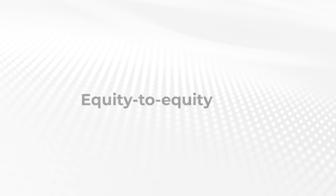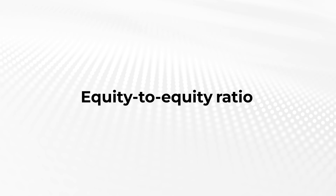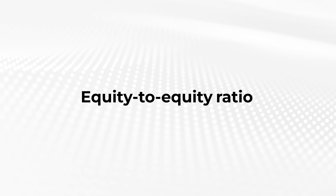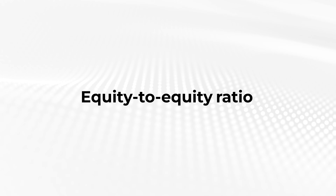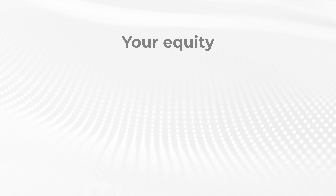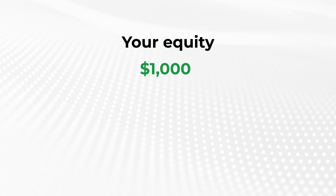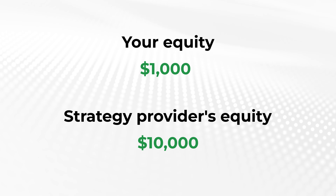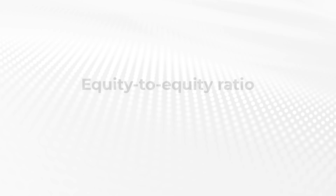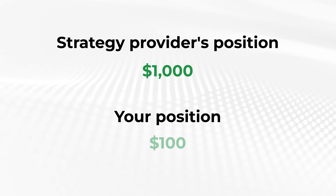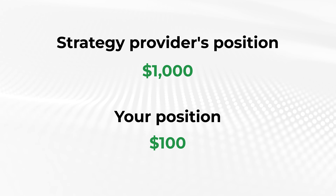SeeTrader Copy uses the equity-to-equity ratio, meaning that the volume of a trade you are copying will be defined by both the strategy provider's equity and yours. Say you have allocated $1,000 to copying and the strategy provider's equity is $10,000. This results in a ratio of 1 to 10, meaning you are copying the strategy provider's trades at 10% of their volume.